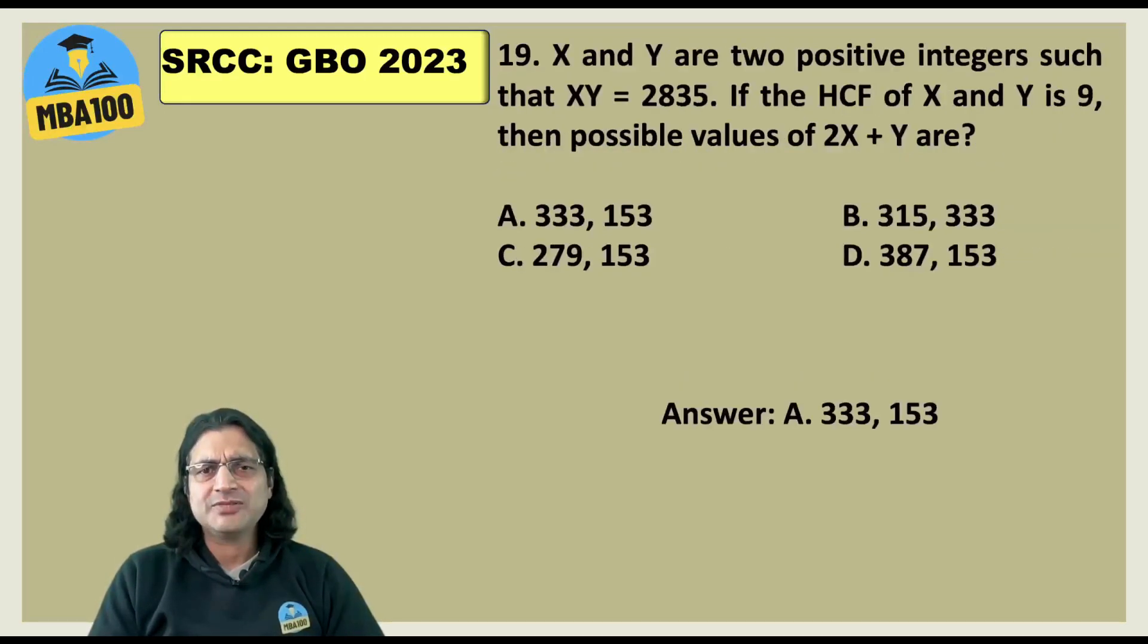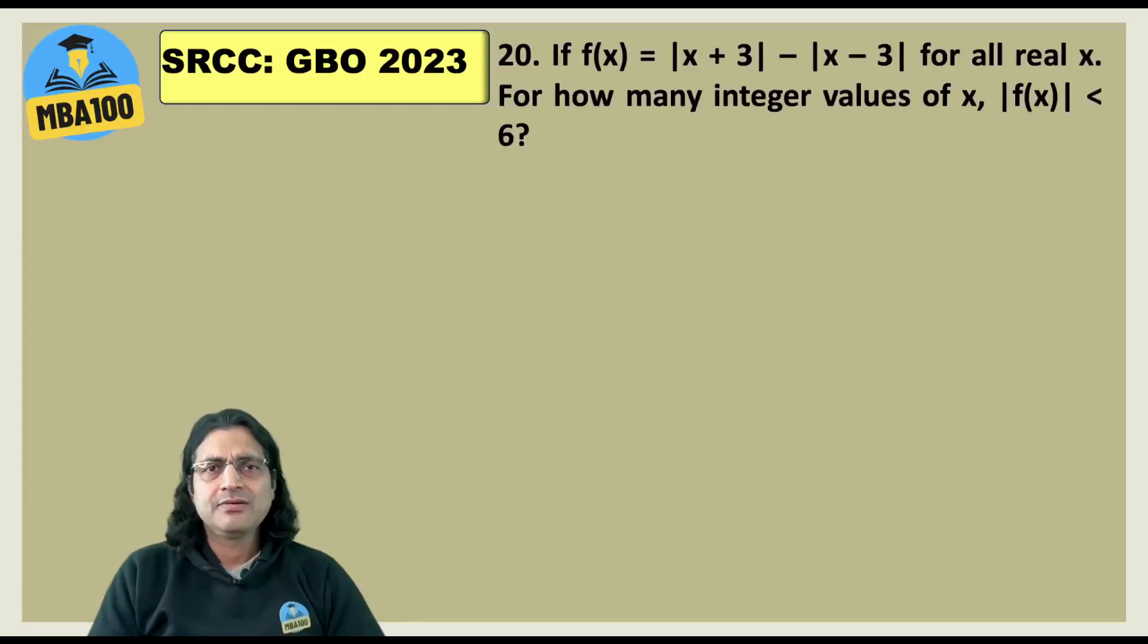Here one of the conceptual questions but a simple one. 333 and 153. There were two more combinations which were possible as value of 2x plus y.